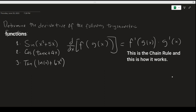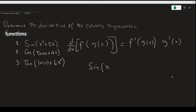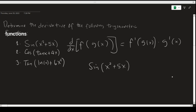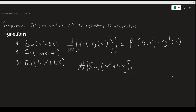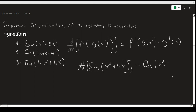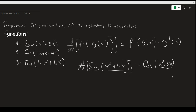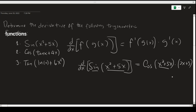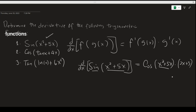Our first function is sine of x squared plus 5x, and we need to find its derivative. First we find the derivative of the outside function — our outside function here is sine and its derivative is cosine. Then we keep the inside function the same, x squared plus 5x, and multiply it by the derivative of the inside function. The derivative of x squared is 2x and the derivative of 5x is 5.